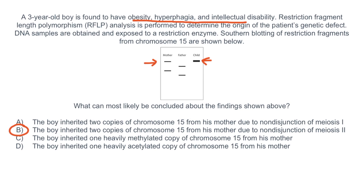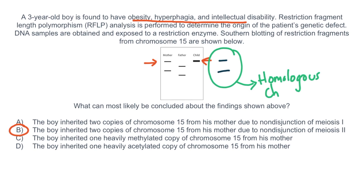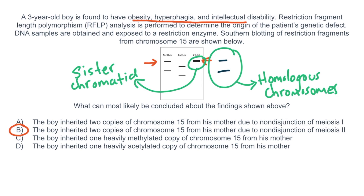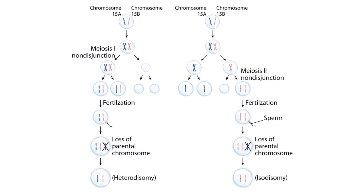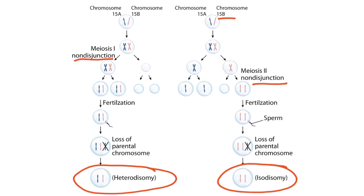How would the results have appeared if the correct answer was A? The result would have looked something like this. In this example, notice that the child shares the exact same chromosomes as his mother, meaning he inherited a pair of homologous chromosomes. So this pattern represents homologous chromosomes, whereas the other pattern represents sister chromatids. Non-disjunction during meiosis 2 results in the inheritance of two sister chromatids — two 15B chromosomes, or two identical chromosomes. This is also called isodisomy, represented by two identical restriction fragments resulting in one thick band. Alternatively, non-disjunction during meiosis 1 results in the inheritance of a pair of homologous chromosomes. Because these two chromosomes are slightly different from one another, restriction fragments would appear as two distinct bands.